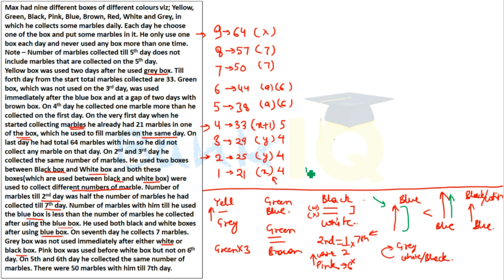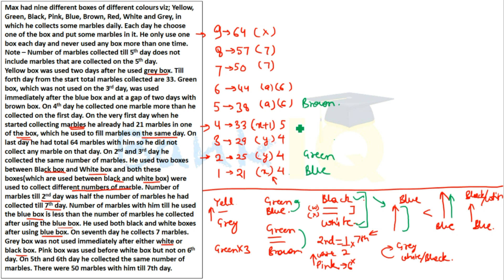Testing possibility 1: blue on day 3. Then green is immediately after blue, so green is on day 4. But green was not used on day 3 — that's satisfied. Now checking green and brown: they have a two-day gap. Also checking black and white placement — both must be after blue (day 3), and there must be two boxes between black and white collecting different marble counts.